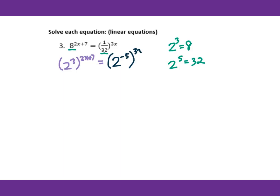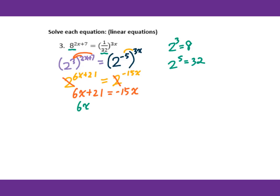Then we apply the distributive property for the exponent. You will get 6x plus 21 equals 2 to the negative 15x. The bases cancel, giving us 6x plus 21 equals negative 15x. This is a linear equation, so isolating x: 6x plus 15x equals negative 21, giving 21x equals negative 21, so x equals negative 1.